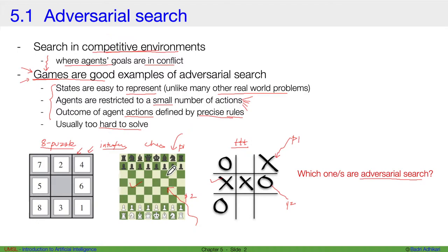Chess and tic-tac-toe are examples of adversarial search, whereas the 8-puzzle is not. The process is adversarial in tic-tac-toe because, as the player who places X, you are searching for a solution that gives you three X in a row — but your search is in a competitive environment because the other player interferes with your search process.